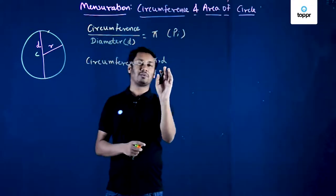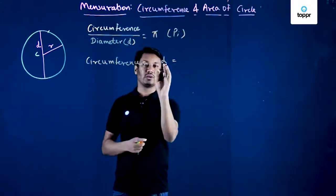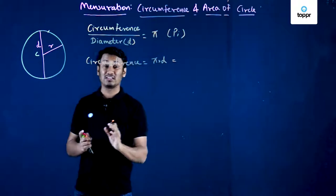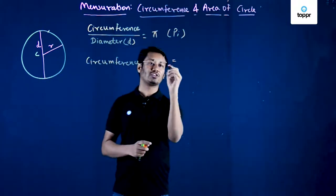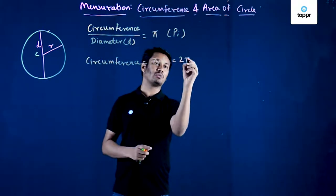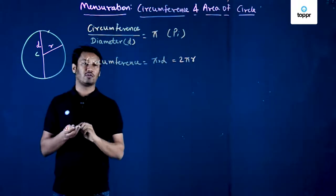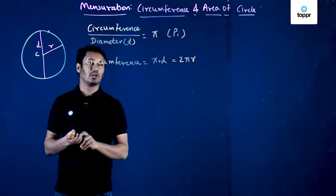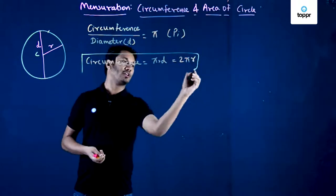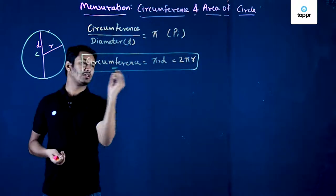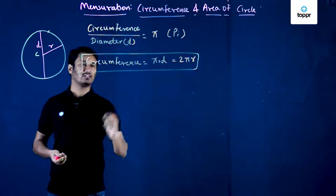Pi multiplied by the diameter. We also know that diameter d is nothing but twice the radius, 2r. So I can replace d with 2r and that gives one more formula for circumference of the circle. So if you know the radius or the diameter, you can calculate circumference.